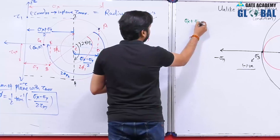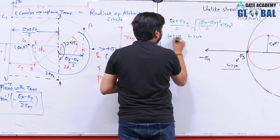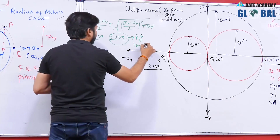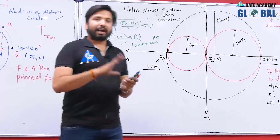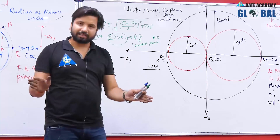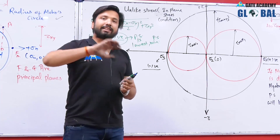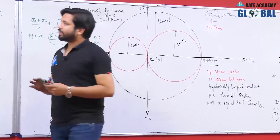For a plane stress unlike stress problem, the negative value of principal stress from the formula is the minimum (lowest) principal stress. The fundamental concept is: draw the Mohr's circle between the algebraically largest and algebraically lowest principal stress values, and its radius gives the absolute tau max. The radius of the Mohr's circle drawn between the greatest and lowest value equals the absolute tau max.